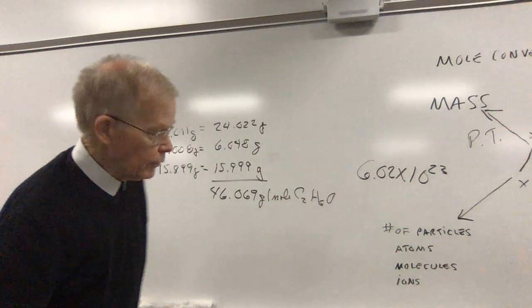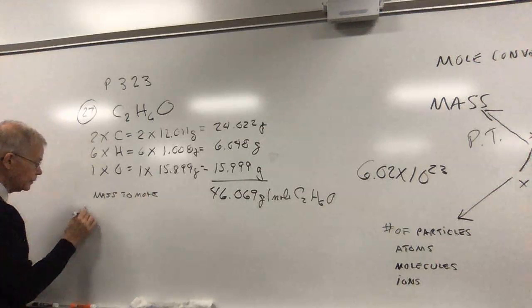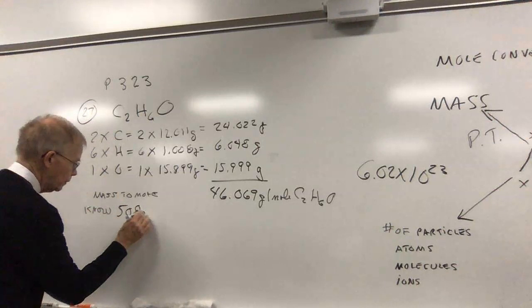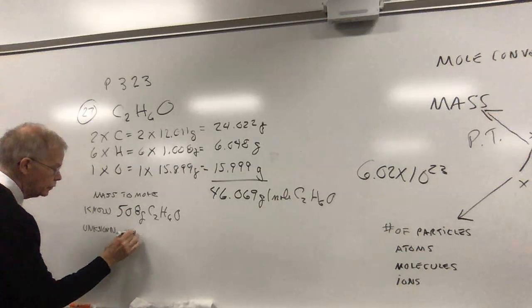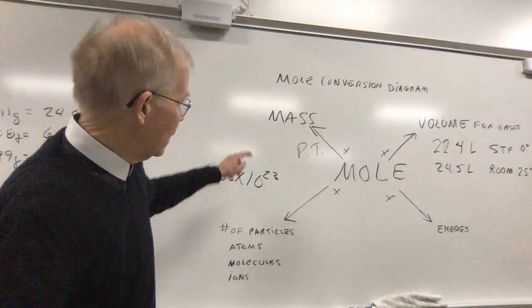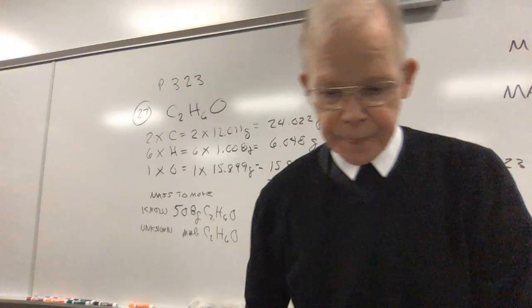Now my problem gives me the mass. So I want to go on my mole diagram from the mass to the mole. So my known is mass, and that's 5.08 grams C2H6O. My unknown is the moles of C2H6O. So I'm using my mole diagram once again. They give me mass, they want moles. I'm going to go in, so I'm going to divide by the molar mass. I'll set that up as a factor label problem.